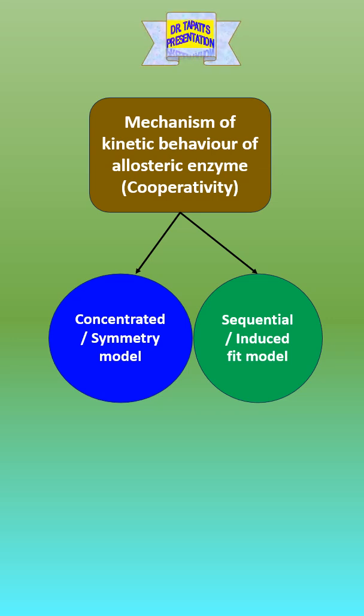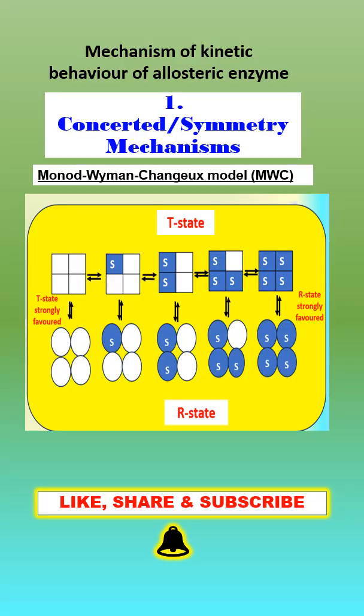Cooperativity can be explained by two models: concerted and sequential models. The concerted or symmetry or MWC model assumes that the enzyme subunits are connected in such a way that a conformational change in one subunit is necessarily conferred to all other subunits.